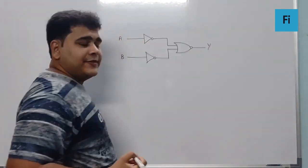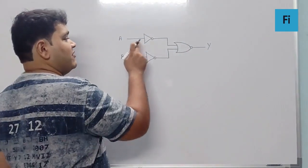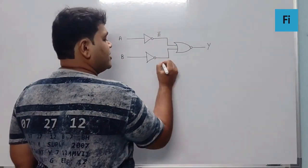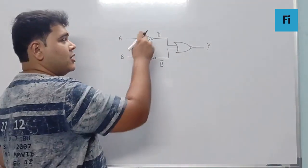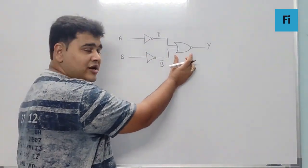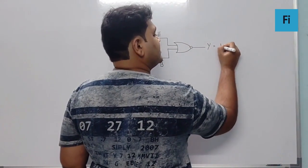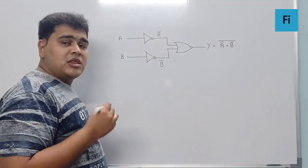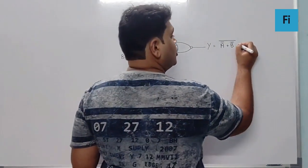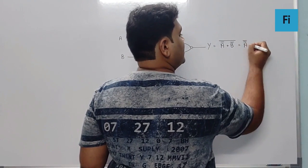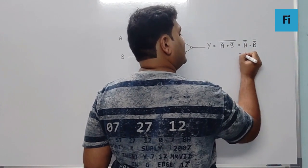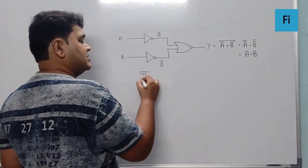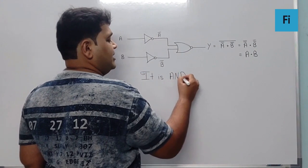Now, A when passes through NOT gate becomes A bar, and when B passes through NOT gate becomes B bar. Now, A bar and B bar when it enters the NOR gate, we get that as A bar plus B bar, the whole bar. Now, if you apply De Morgan's law, you get this as A double bar dot B double bar, which is nothing but A dot B. It means it is AND gate.